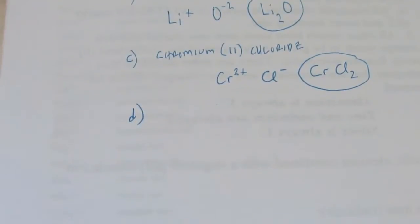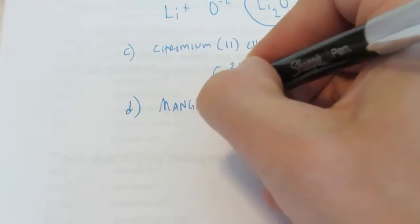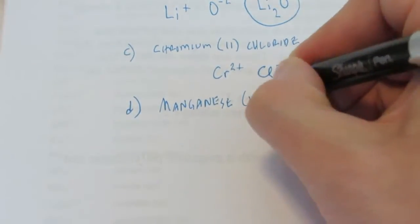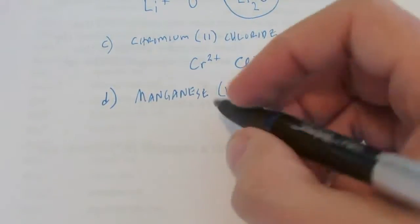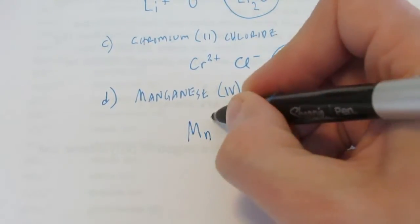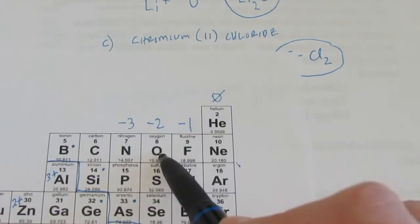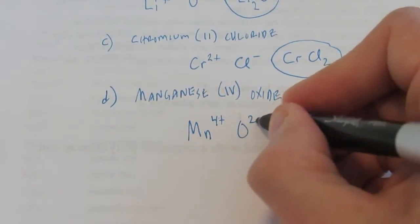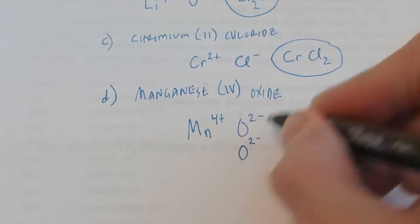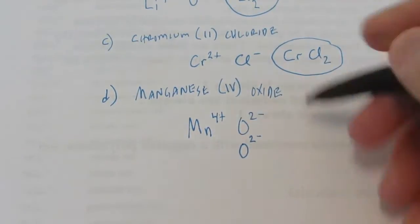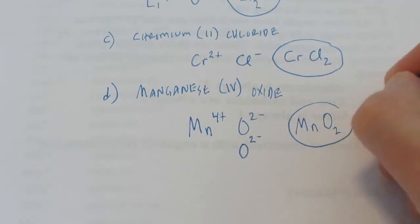Letter D is manganese(IV) oxide. The Roman numeral tells us the charge of the metal right away — manganese is +4. Oxide comes from oxygen, it's 2 negative. If I had 2 oxides, I'd have 4 negatives against my 4 positive, so the formula is MnO2.